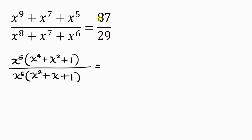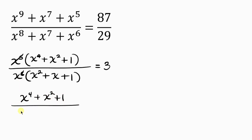Now, 29 can actually divide 87 — 87 divided by 29 gives 3. Notice that x to the power of 5 can cancel with x to the power of 6, leaving x in the denominator. So what I have left is x to the power of 4 plus x to the power of 2 plus 1, all over x.